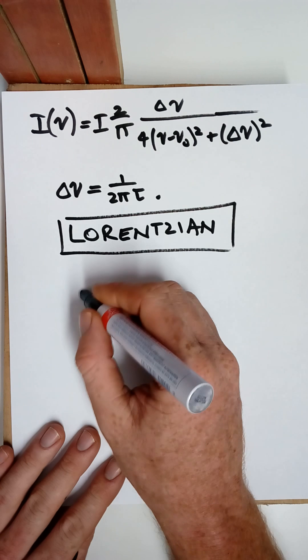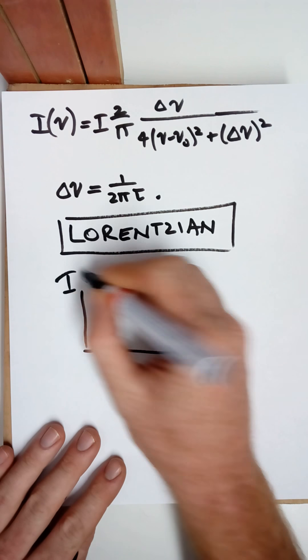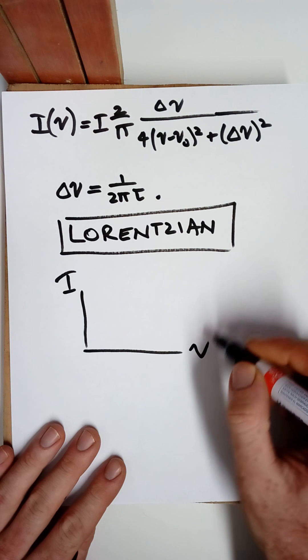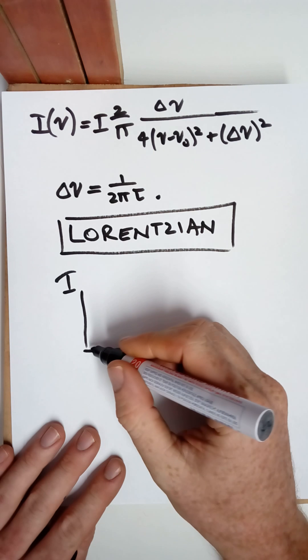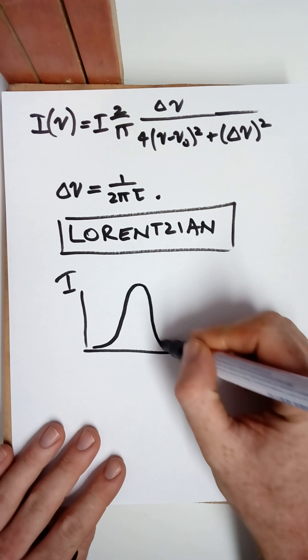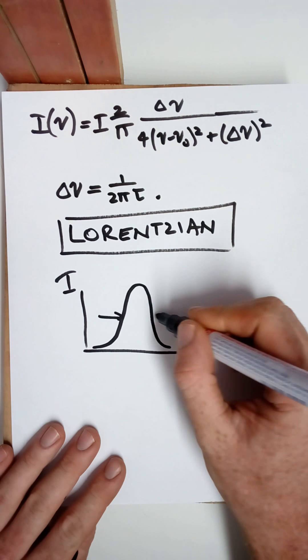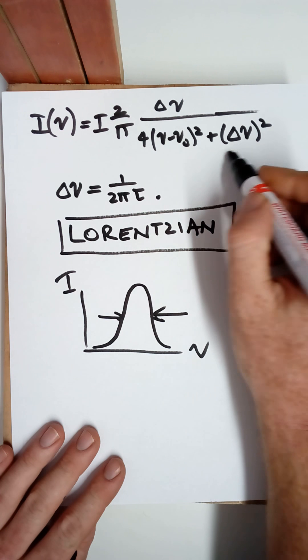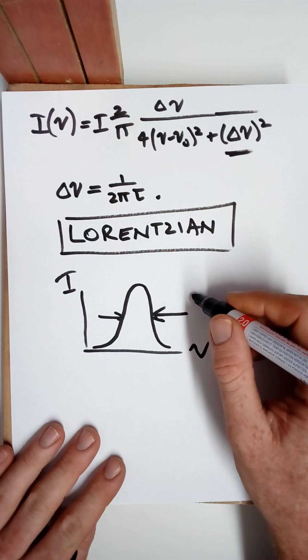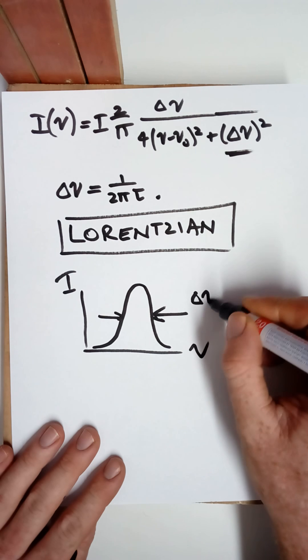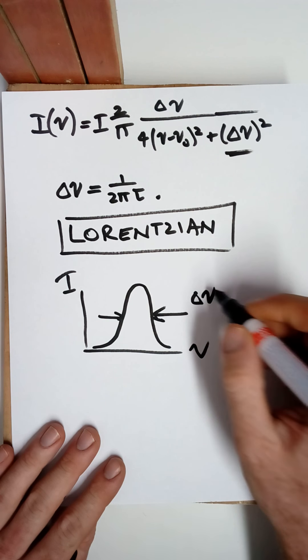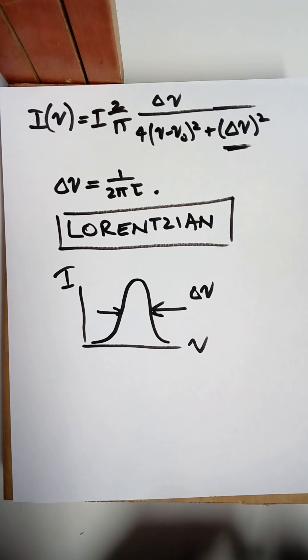And so what this is, as I mentioned, is a Lorentzian function. And if you plot this, intensity versus frequency, we get this, where the line width is equal to this factor here.